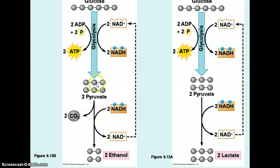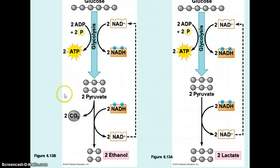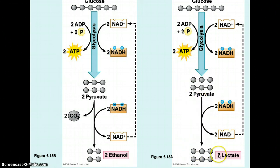These diagrams from your book show the process: the six-carbon glucose producing pyruvate molecules in both cases. In alcoholic fermentation, the pyruvate releases some carbon dioxide and uses electrons from the NADH to produce NAD+ — which can be recycled — and two molecules of ethanol or alcohol. This is the kind of alcohol found in beer and wine. In lactic acid fermentation, the same glycolysis process produces pyruvate molecules, which then change into two lactate or lactic acid molecules, also recycling the NAD+ for the next round.